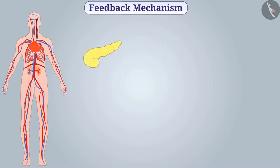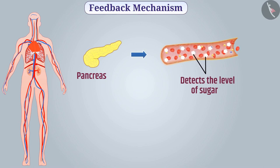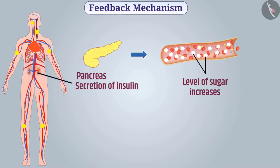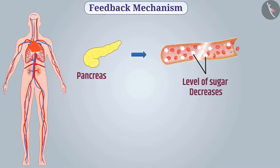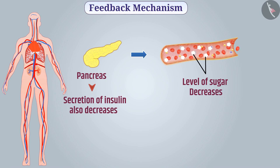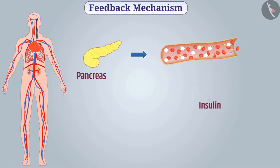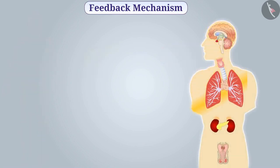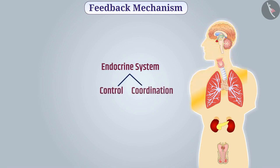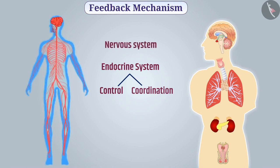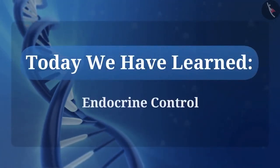For example, the cells of the pancreas detect the level of sugar in the blood. When the level of sugar in the blood increases, the secretion of insulin from the pancreas also increases. And when the level of sugar in the blood decreases, the secretion of insulin from the pancreas also decreases. Thus, the level of sugar in the blood is controlled. You must now understand that the endocrine system assists in the control and coordination of the body. Therefore, the nervous system and the endocrine system together perform the function of control and coordination in the body. Today we have learned about endocrine control.